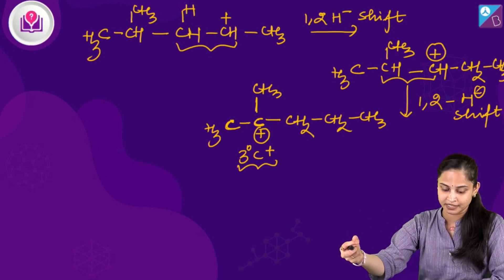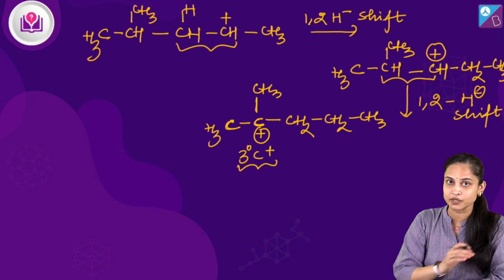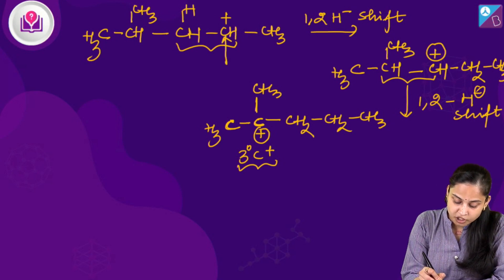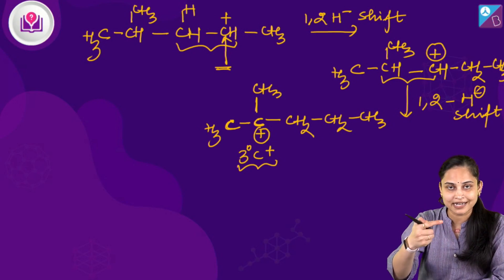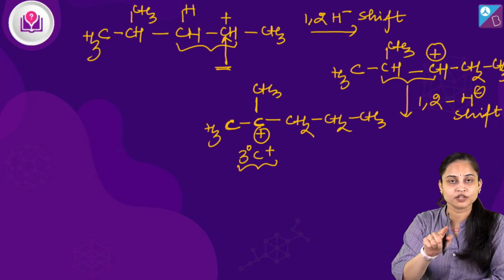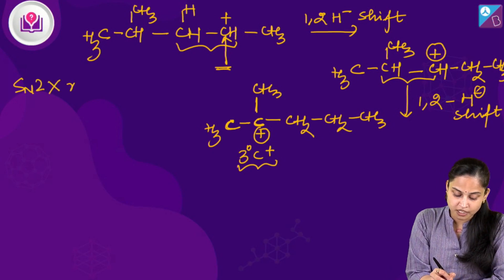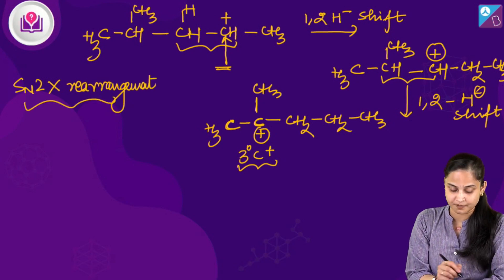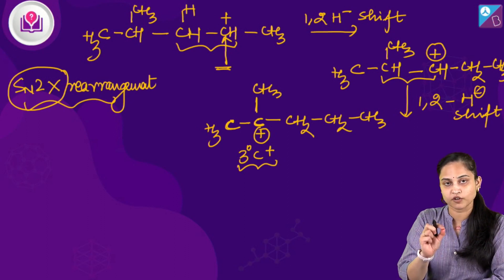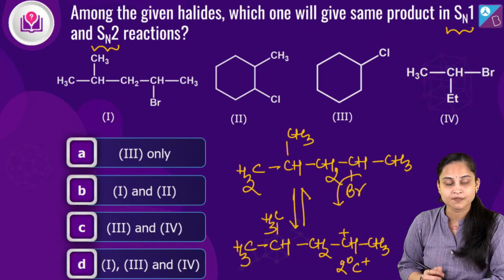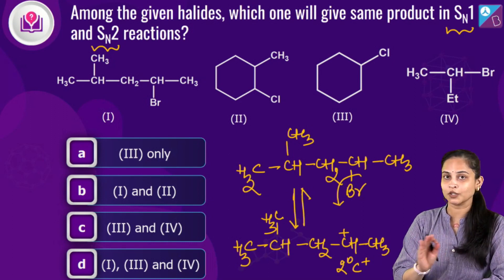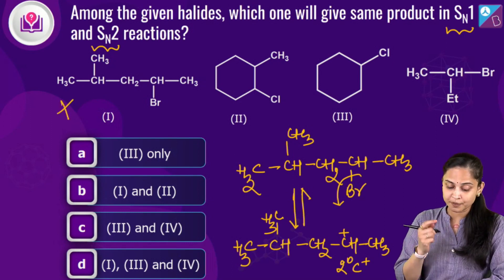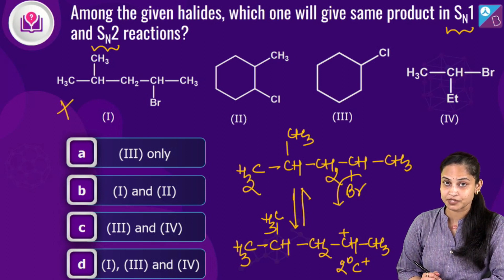In SN2, however, the nucleophile attacks only at the carbon directly attached to the leaving group — there is no possibility of rearrangement. Therefore, SN1 and SN2 give different products for option 1, so this option is ruled out.